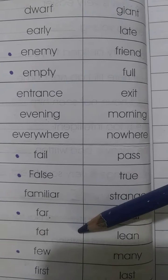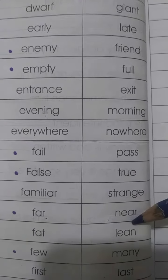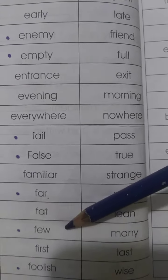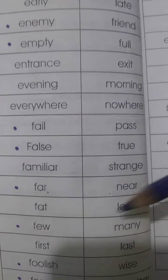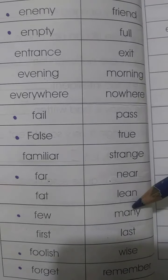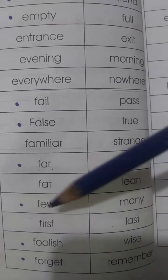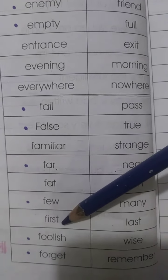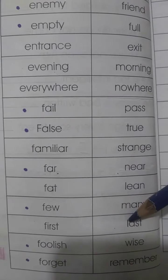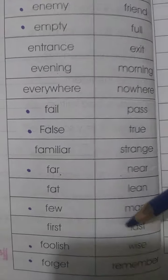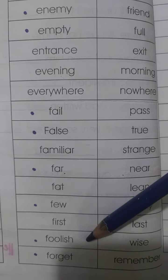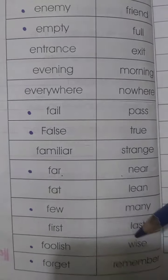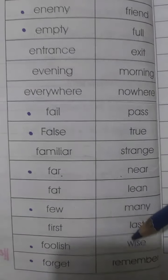'Fat' — mouta. Antonym is 'lean' — padla. 'Few' — yianni chand, meaning a few. Antonym is 'many' — yianni bhoat, meaning a lot. 'First' — yianni pehla. Antonym is 'last' — yianni akri. 'Foolish' — yianni bewaqoof. Antonym is 'wise' — hakalmat.